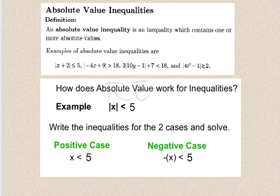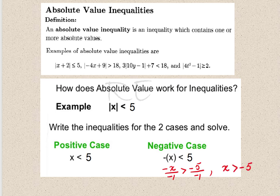For the absolute value of x strictly less than 5, we have a positive case when x is less than 5, and a negative case, negative x less than 5. When we divide both sides by negative 1, we switch the inequality and get x greater than negative 5.